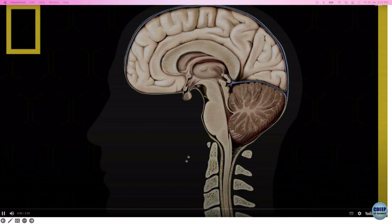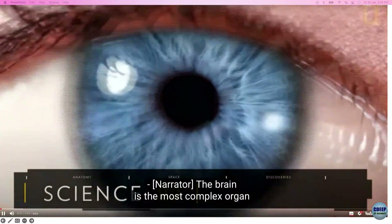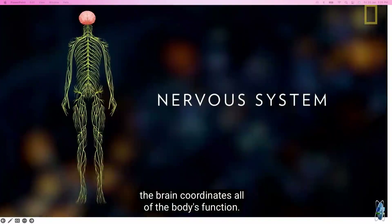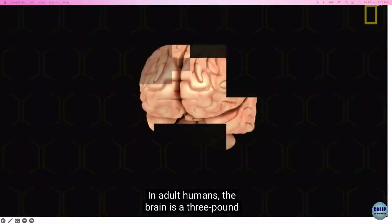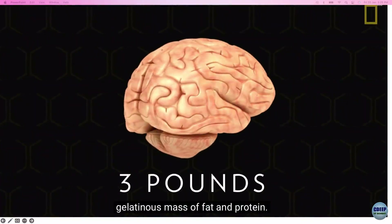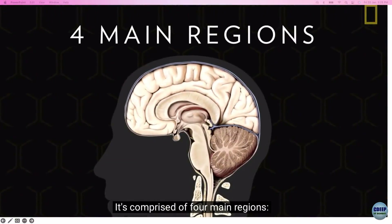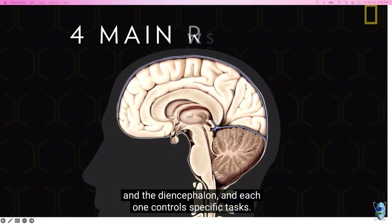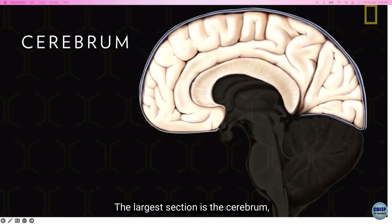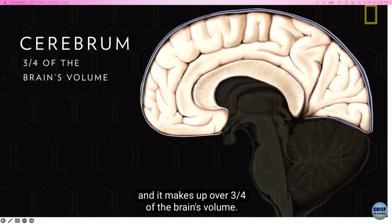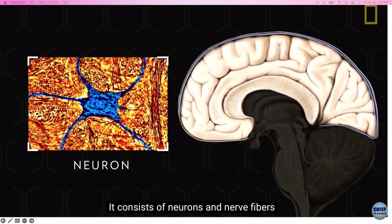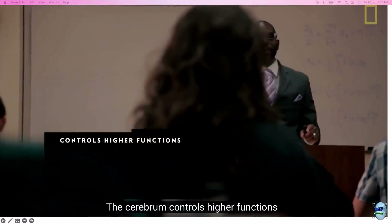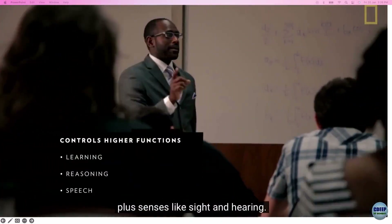The brain is the most complex organ in the human body. As part of the nervous system, the brain coordinates all of the body's functions. In adult humans, the brain is a three-pound gelatinous mass of fat and protein. It is comprised of four main regions: the cerebrum, the cerebellum, the brain stem, and the diencephalon, each controlling specific tasks. The largest section is the cerebrum, making up over three quarters of the brain's volume, consisting of neurons and nerve fibers that transmit information. The cerebrum controls higher functions such as learning, reasoning, speech, sight, and hearing.